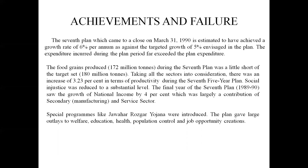Productivity of all sectors was improved at the time, and social injustice was reduced. Proper distribution of education facilities, health facilities, and family welfare measures were put in place, so the Seventh Five-Year Plan was able to reduce social injustice in the economy. The service sector was also performing well, growing at the rate of 4% per year, and the manufacturing sector also performed well. Special programs like Jawahar Rozgar Yojana were introduced. The plan gave large outlays to welfare, education, health, population control, and job opportunity creation.